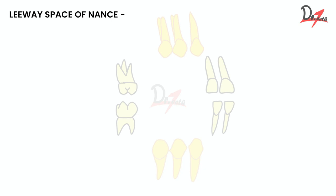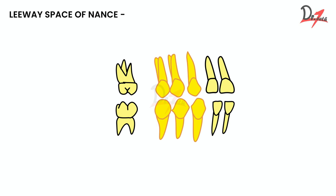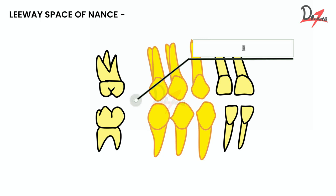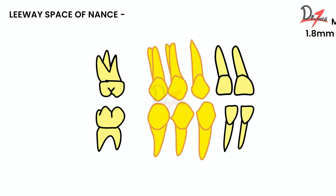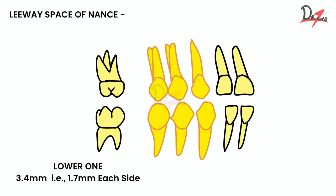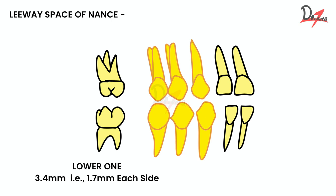When the permanent teeth erupt, there will be some extra space left. This extra amount of space is called the leeway space of Nance. It is greater in the mandibular arch compared to the maxillary arch. In the maxillary arch we have 1.8 mm, that is 0.9 mm on each side, while in the mandibular arch we have 3.4 mm, that is 1.7 mm on each side.